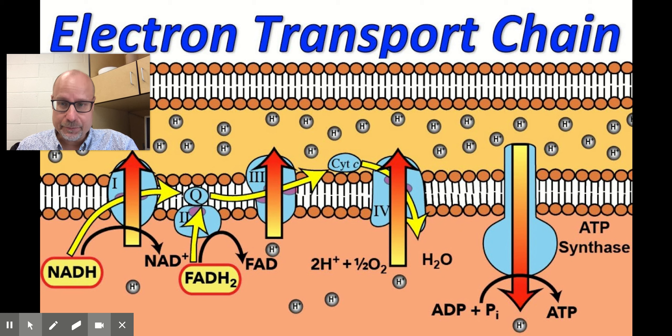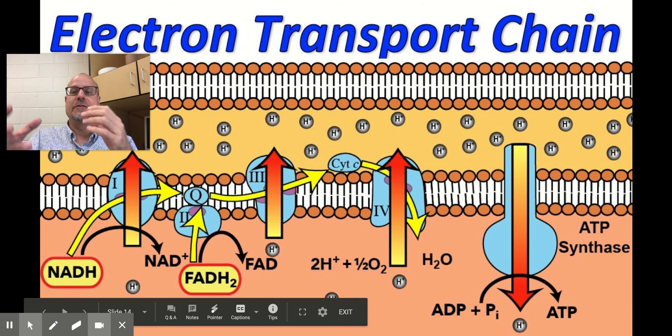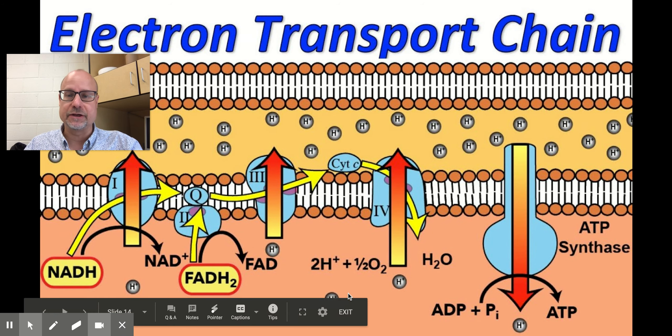And so what happens is this NADH is used, turned back into NAD plus, and the energy involved is used to drive these hydrogen ions from an area of low concentration to an area of high concentration. So it's driving them up the gradient to increase the force with which those hydrogen atoms want to get out here.